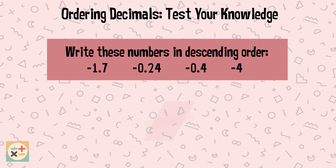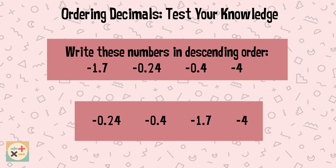In descending order, the numbers are: minus 0.24, minus 0.4, minus 1.7, minus 4.